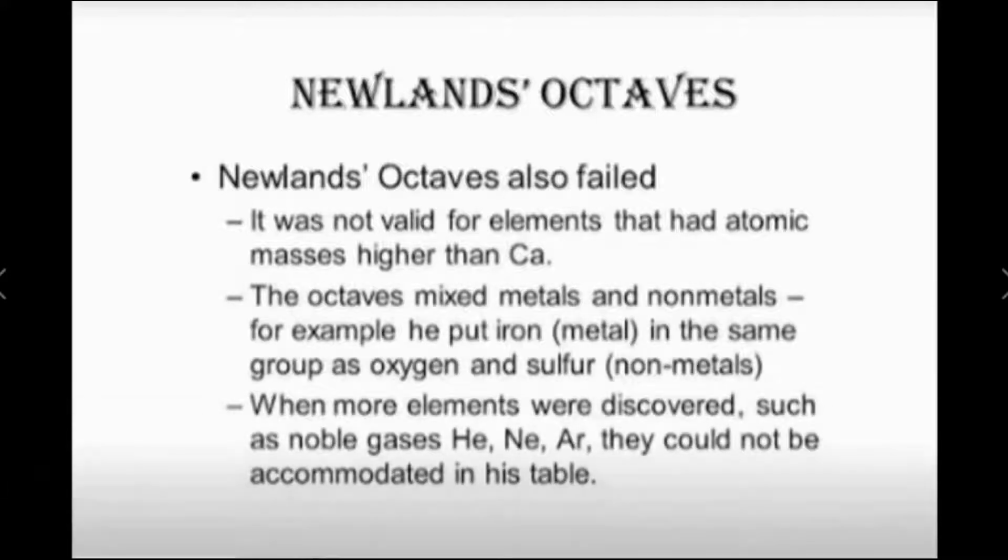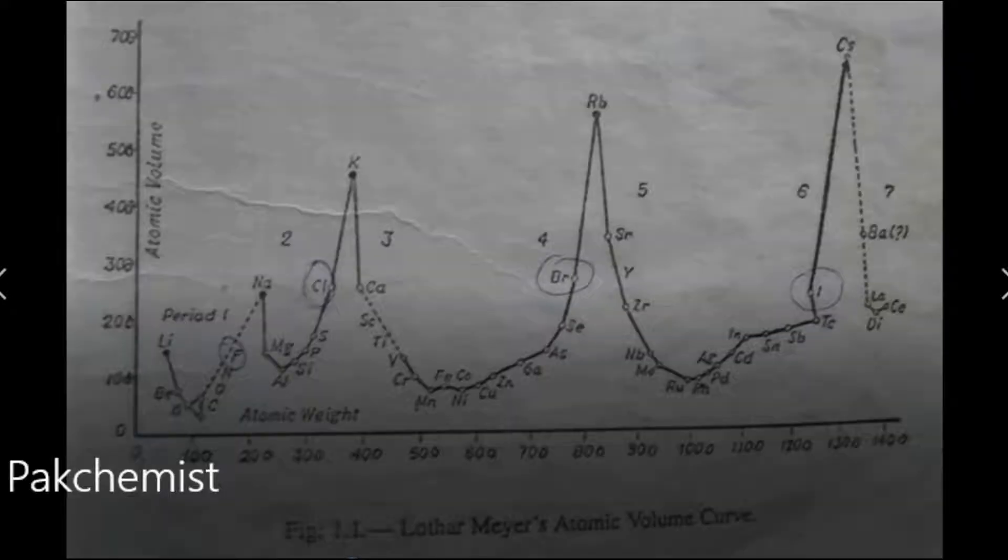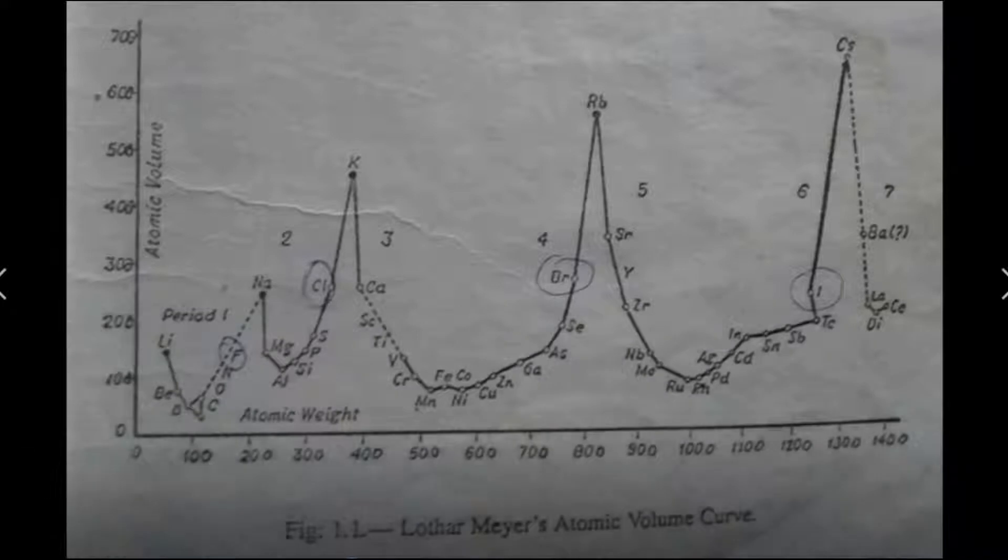Then let's go to Mr. Lothar Mayer. His classification was that he had a curve plot showing that elements with similar physical properties occupy similar positions in the curve. This plot I have highlighted in the circle - sodium, potassium, rubidium, and cesium in the ascending order peaks. These elements are all kept in one group because of having similar physical properties.